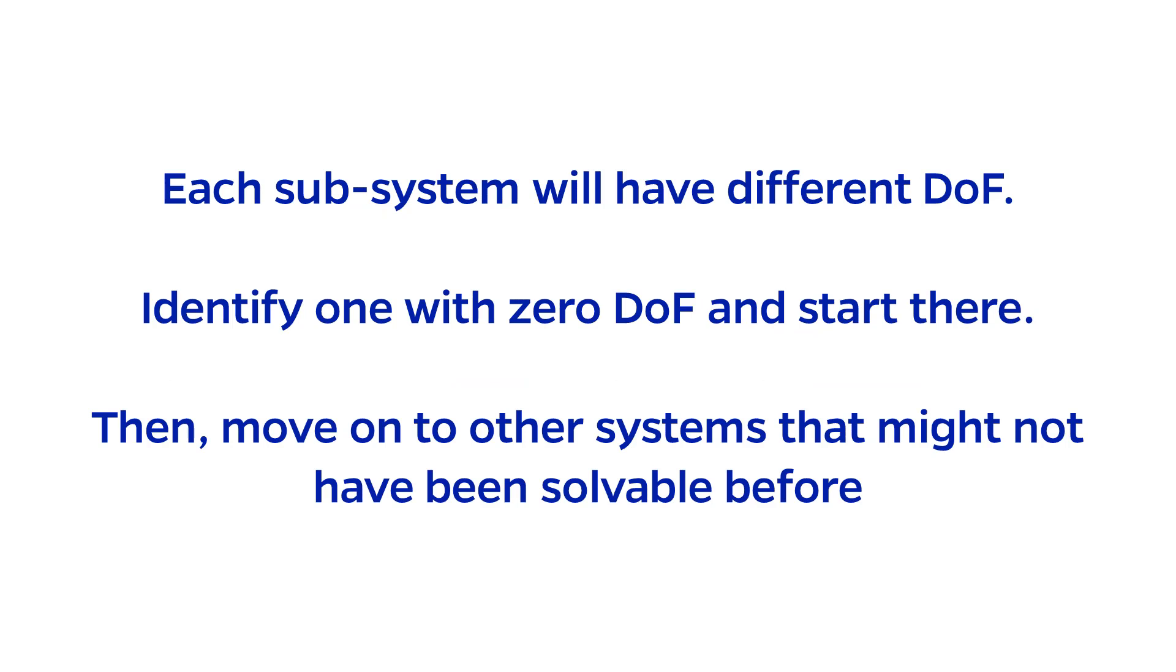Generally, each subsystem will have different degrees of freedom at the beginning. If we can identify a subsystem that has zero degrees of freedom, then we can solve for all variables involved in that subsystem. Afterward, we can move on to other subsystems that might not have been solvable before.